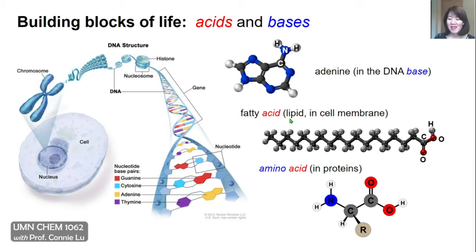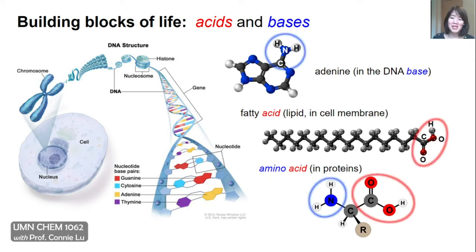Fatty acids, which are acidic, are found in the cell membrane or lipid bilayer. Amino acids, found in proteins, also have an acidic group and an amino group that's basic. Part of being a chemist is being able to recognize what is an acid and what is a base. In nature, a very common base is a nitrogen with three groups attached — found in adenine and inside amino acids. In fatty acids and amino acids, the carboxylic acid group — a carbon double bonded to an oxygen attached to an OH — is another common acidic group found in nature.